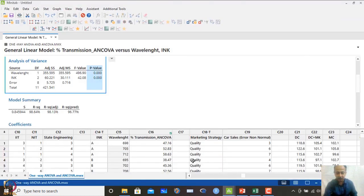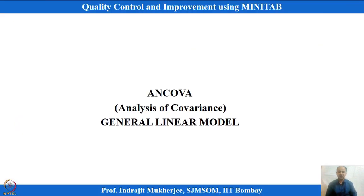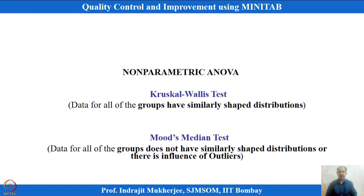Lastly, we must understand that normality assumptions or model adequacy may not hold in certain scenarios. Although ANOVA is very robust and researchers claim small to moderate deviations do not significantly influence results, there are non-parametric options we can adopt when assumptions are not valid or transformation is not working.